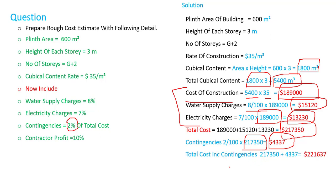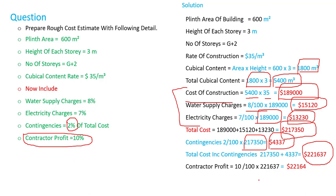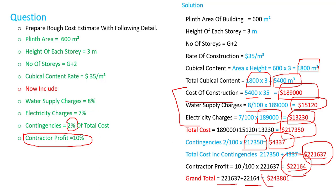The total cost including contingencies is calculated. Next, we add the contractor profit at 10%: 10 divided by 100 multiplied by the total cost including contingencies. The grand total equals the total cost including contingencies plus the contractor profit. This is the approximate estimate according to the cubic content rate method.